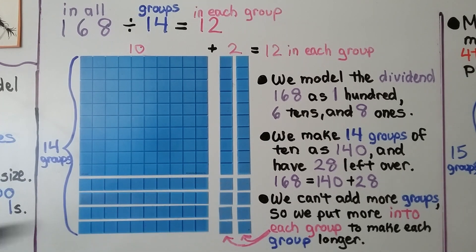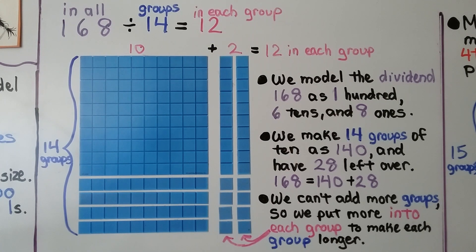See? It makes the groups longer. 168 divided by 14 is equal to 12. There's 12 in each group.